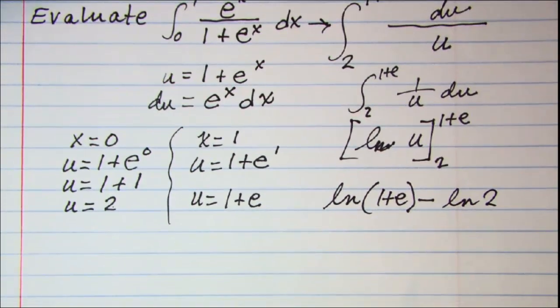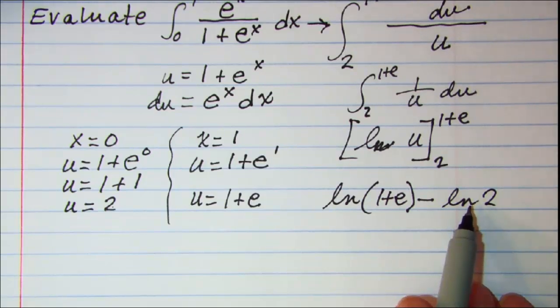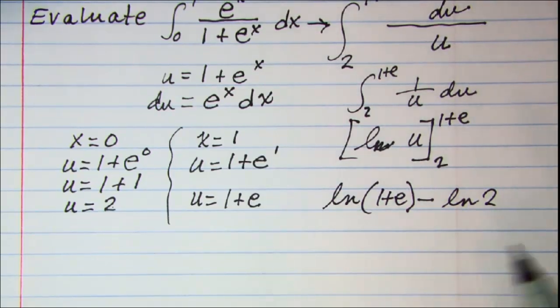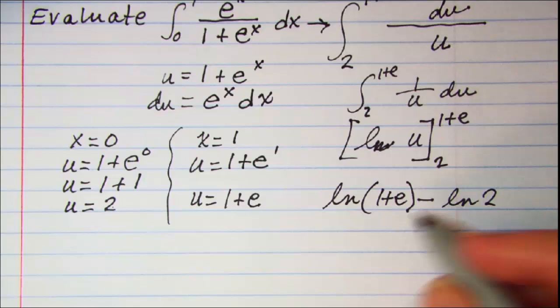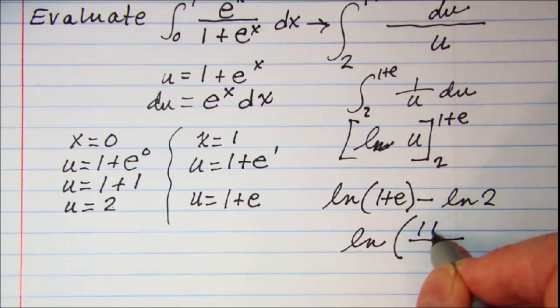Now we're not quite done. Remember that the difference of logarithms is equal to the log of the quotient. So this can be written as ln of the quotient 1 plus e divided by 2.